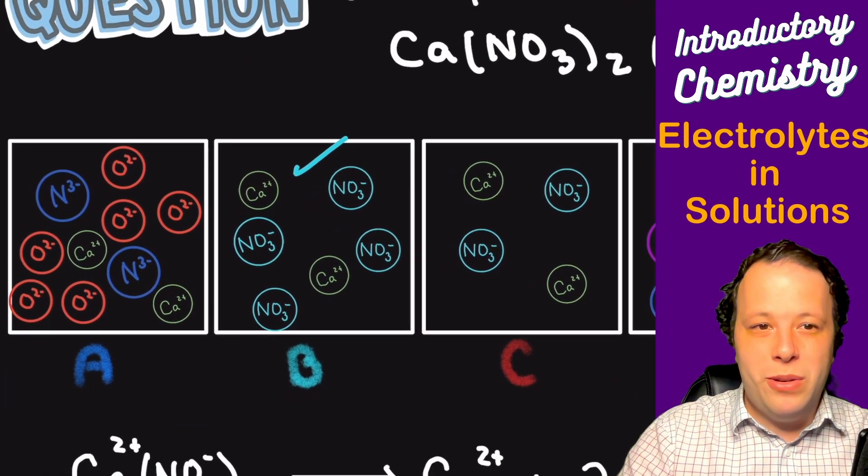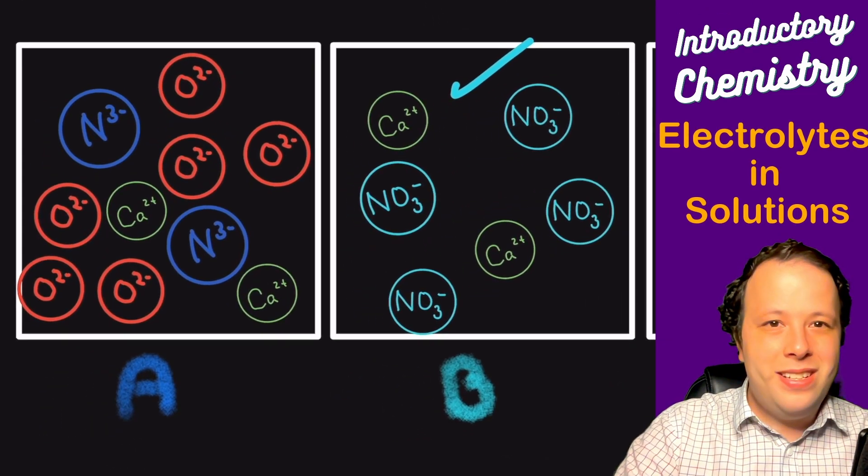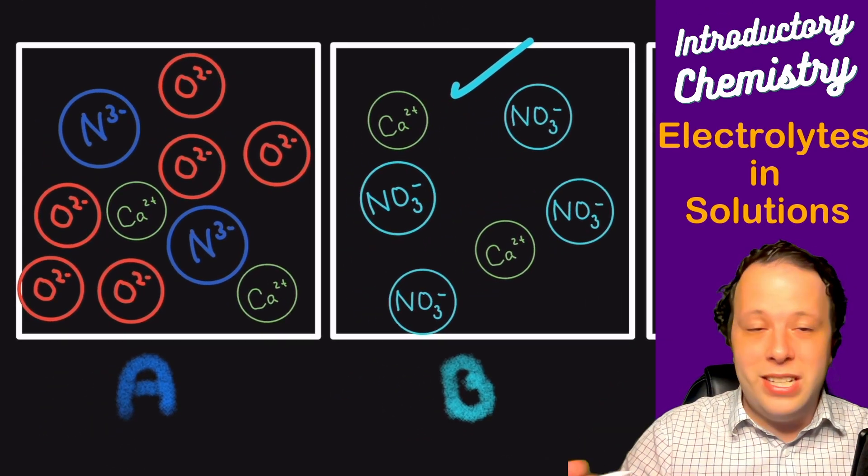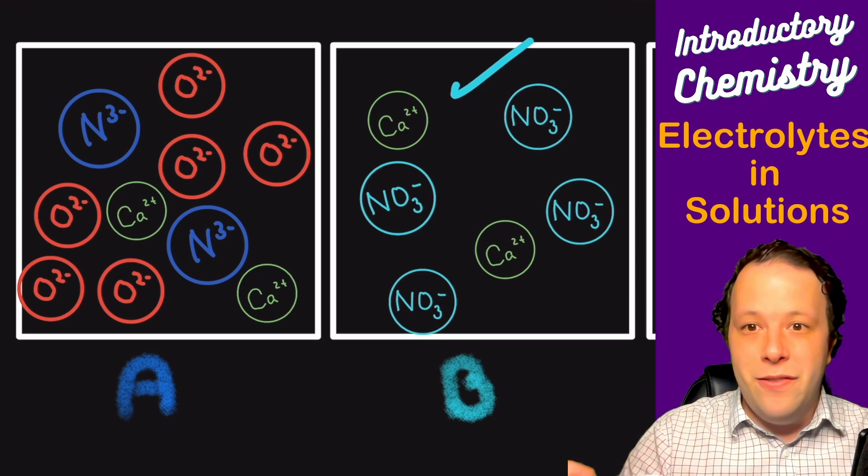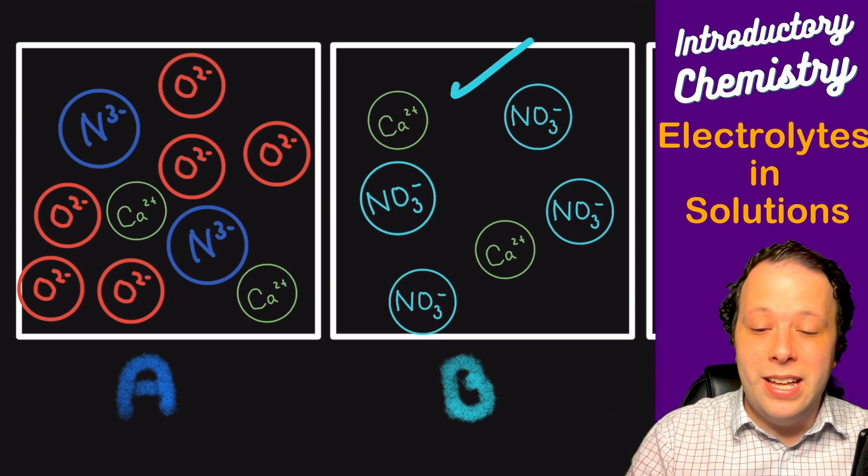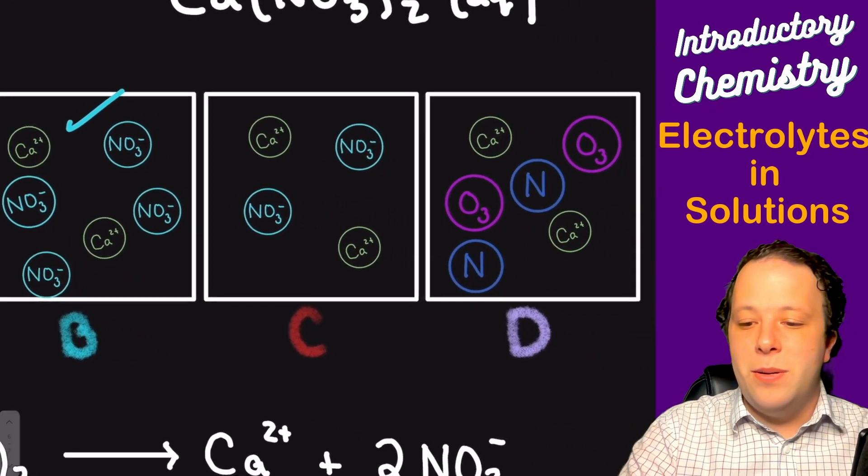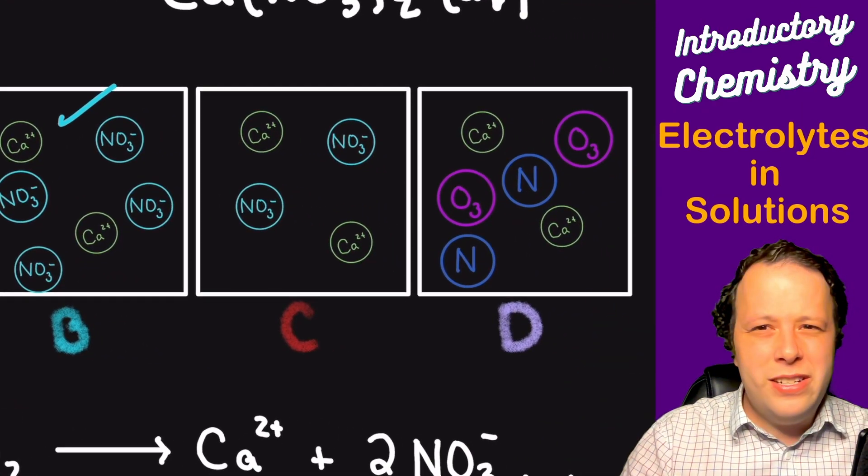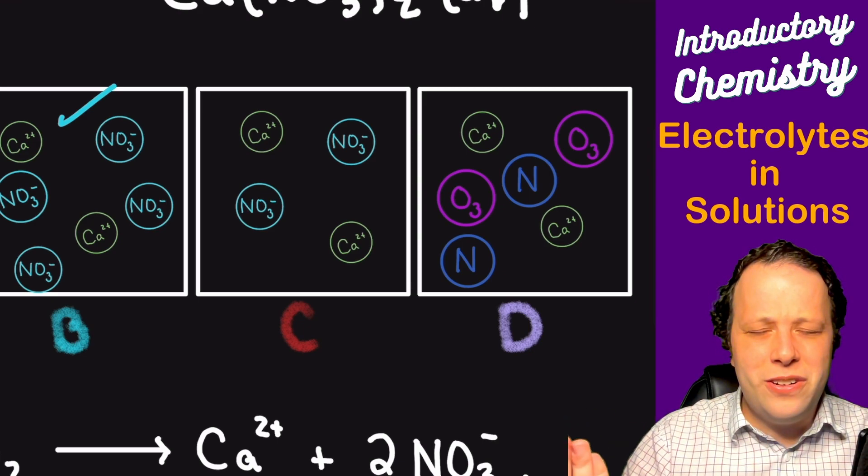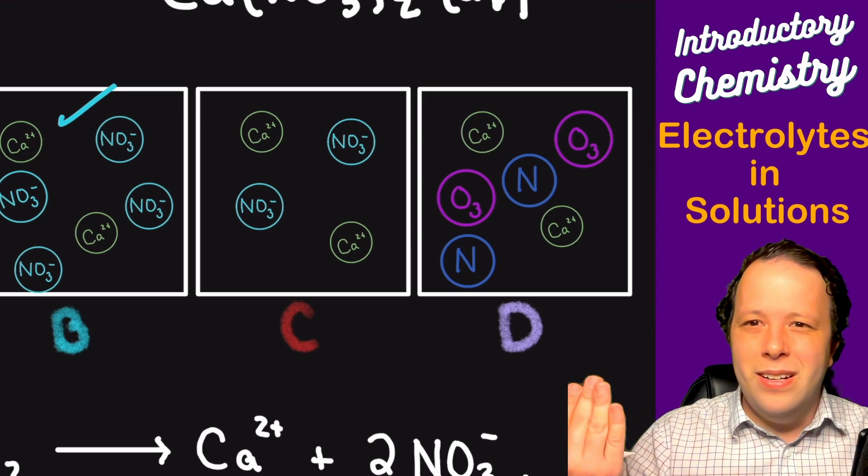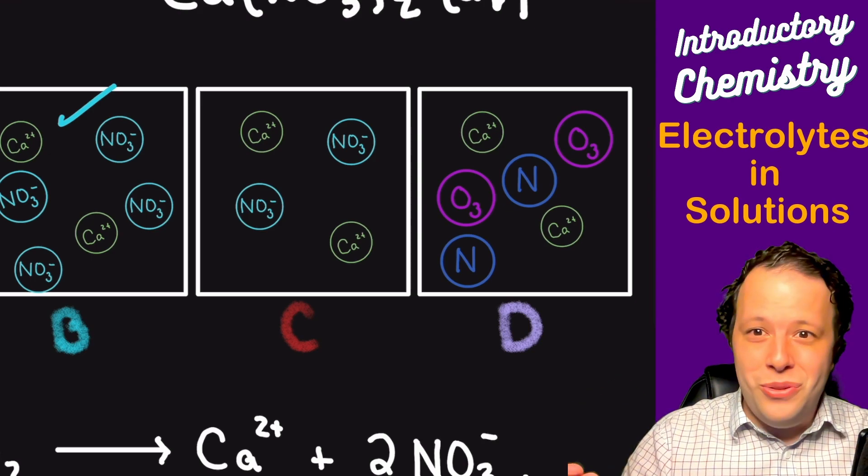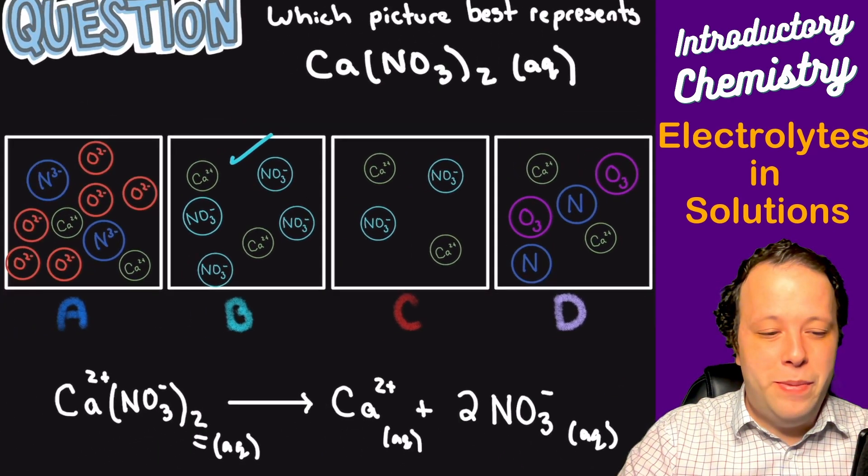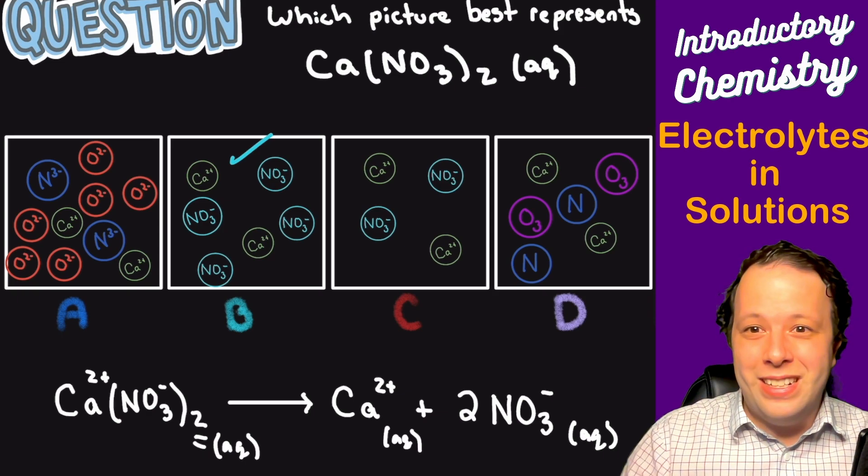Now why weren't the other ones right? Well A, this one's like if you broke everything. Everything just broke apart. All the ions fell apart. But you got to remember the nitrates need to stick together for A. In terms of D, it's kind of a similar idea, but instead the nitrogens don't have a charge. The oxygens don't have a charge. That's really weird. Even for a non-electrolyte it wouldn't do that either. It's just strange. The A and D are strange. So B would be your correct answer.